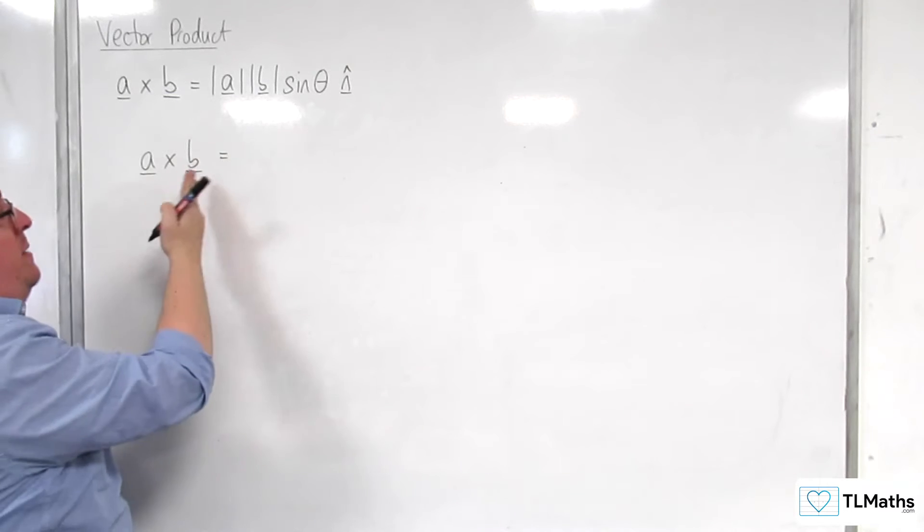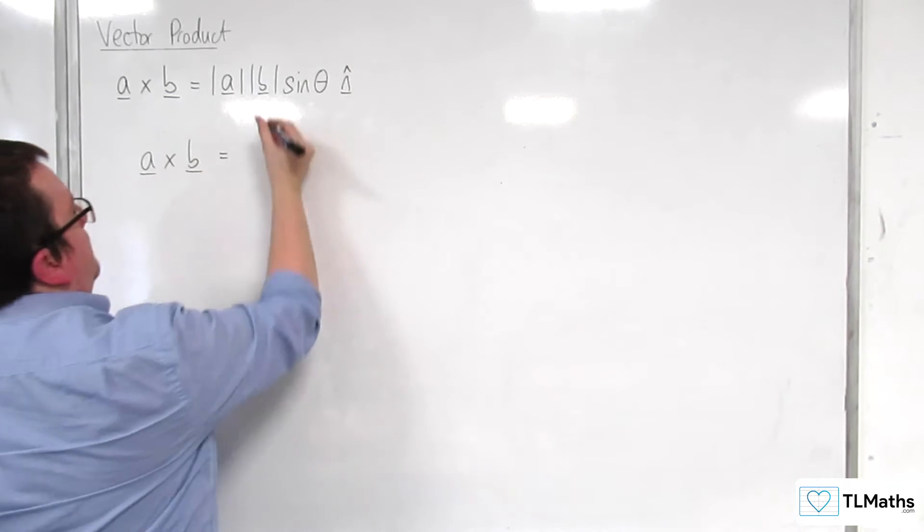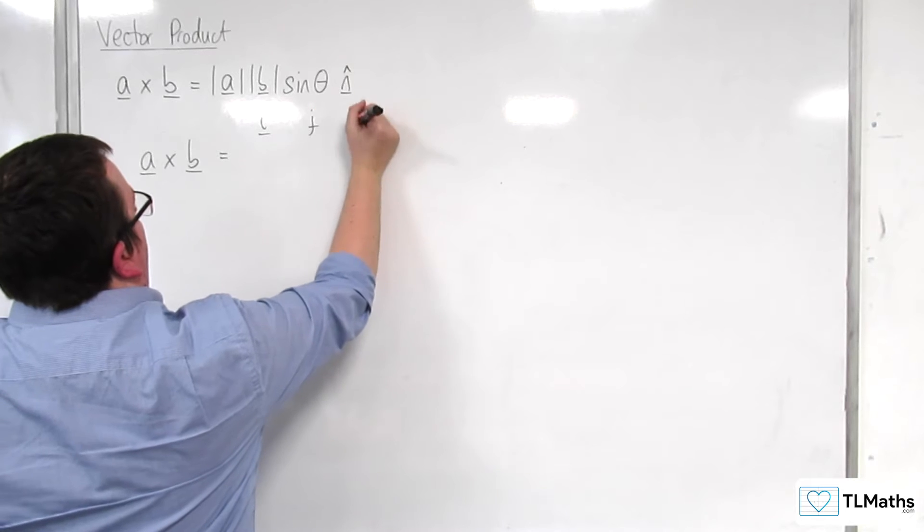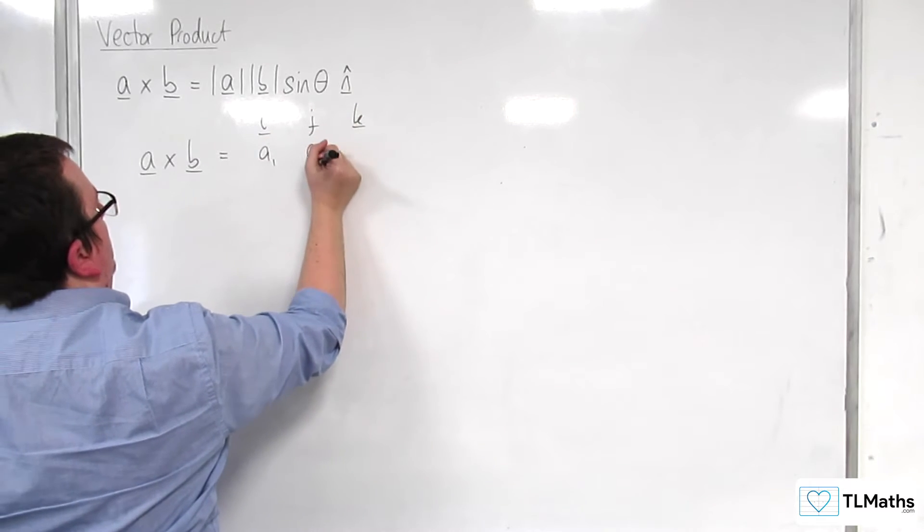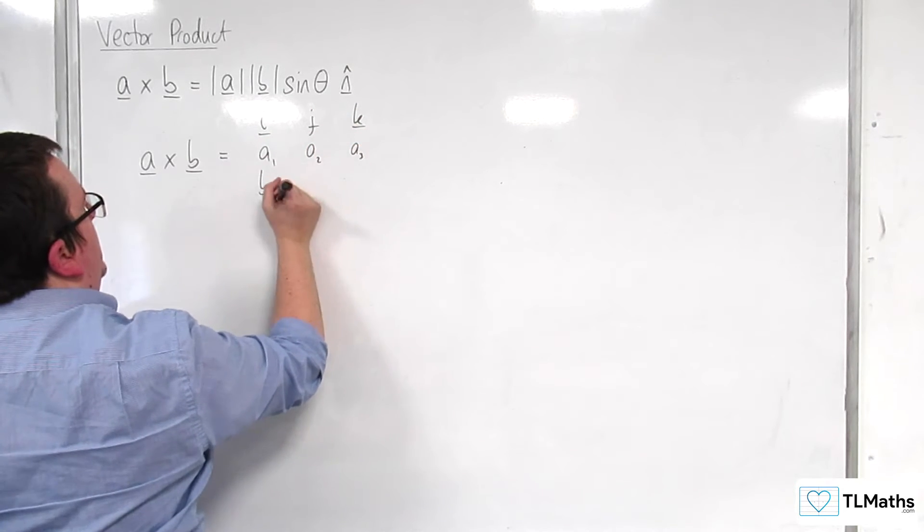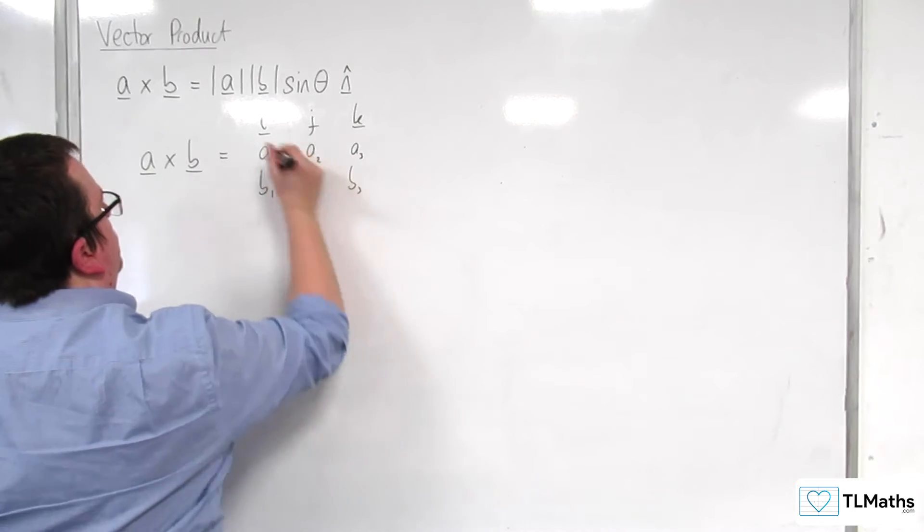where A is A1, A2, A3, B is B1, B2, B3, and we've got I, J, K, A1, A2, A3, B1, B2, B3